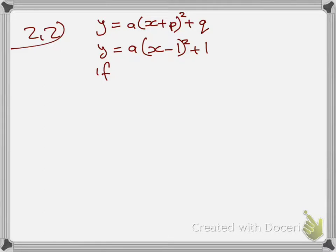Use your turning point. In completed square format, the turning point p gives you x equals negative p, and y equals q. Our turning point is (1, 1), so p becomes negative 1 and q is positive 1. You write your equation as y equals a times open bracket x minus 1, close bracket, squared, plus 1.